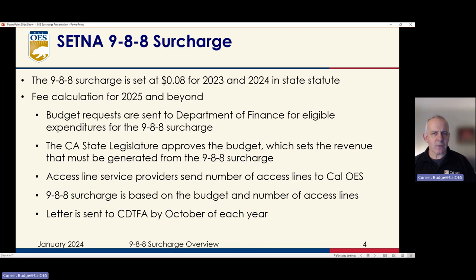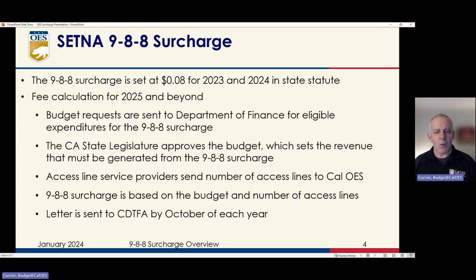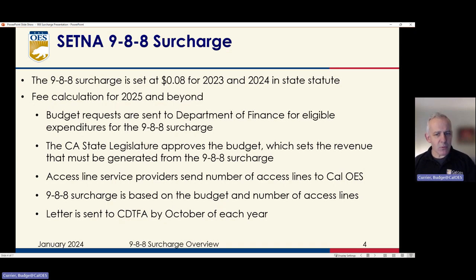These are all the carriers that are out there, like AT&T, Verizon, T-Mobile, Comcast, and Charter — there's a whole list. They send us their access lines, which are any device that when you dial 988 you could access the system. We get that total list of access lines, provided to us by August 1st of each year. We then just do the math: we figure out the number of access lines and we know the authorized budget, and we set the surcharge fee based on those two numbers.